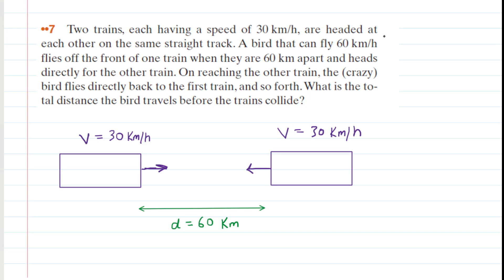We have gone ahead and have drawn the two trains that are headed towards one another. They are both traveling at a speed of 30 kilometers per hour, and initially they are separated by a distance D of 60 kilometers.